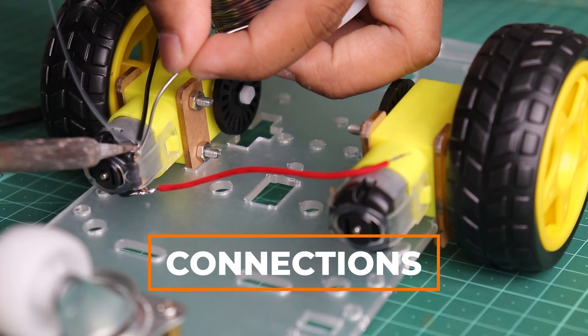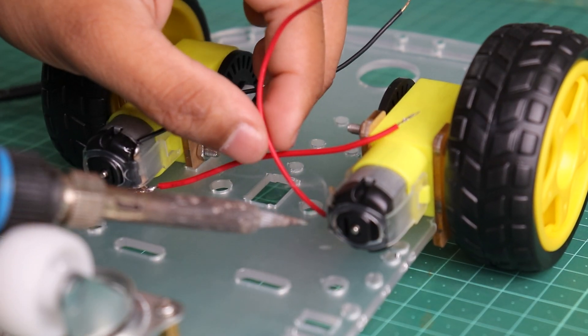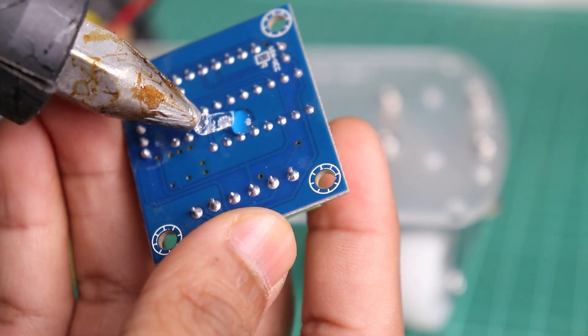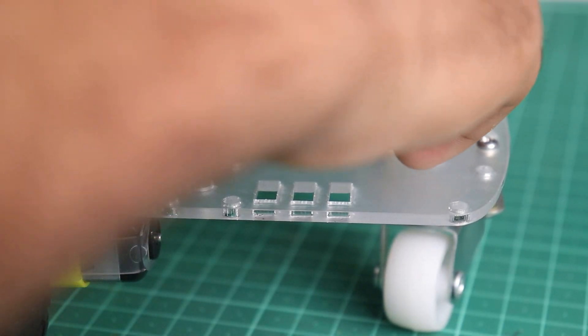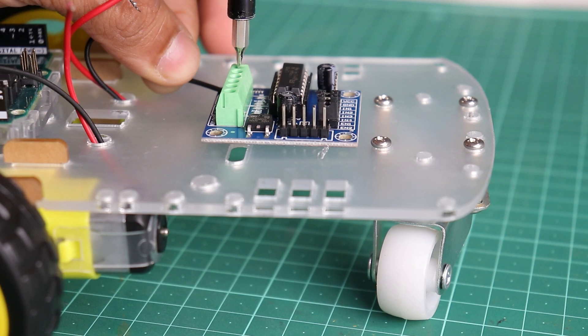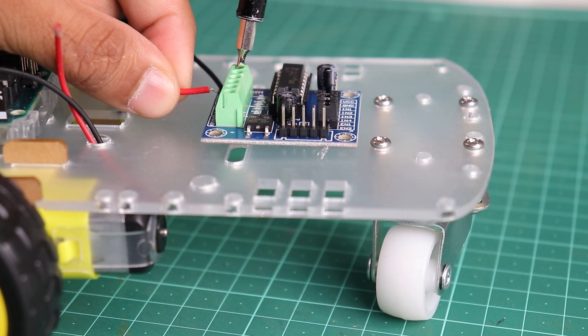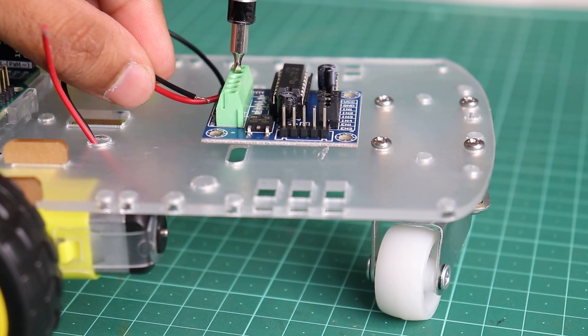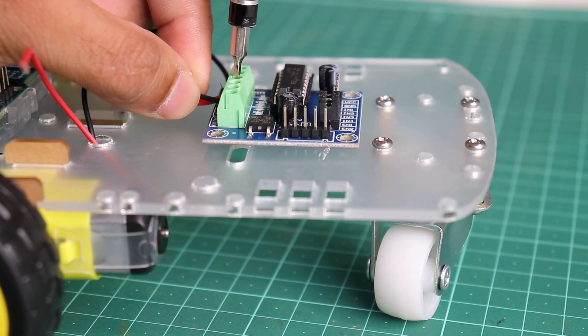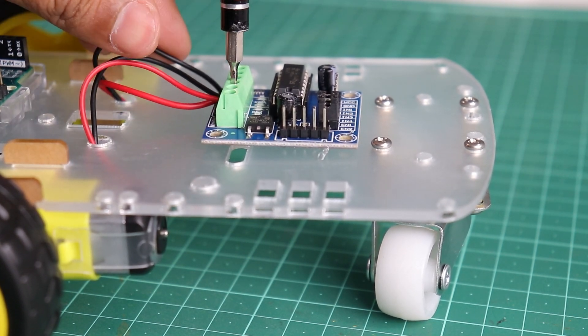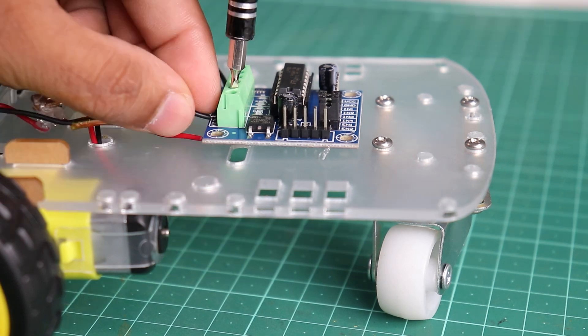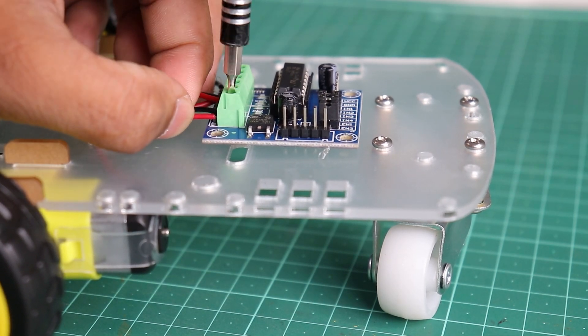All right guys, now let's start with the connections. Solder the wire to the motors. Stick the motor driver to chassis using hot glue. Connect the uno to motor driver, red wire to B plus and black wire to B minus as shown.